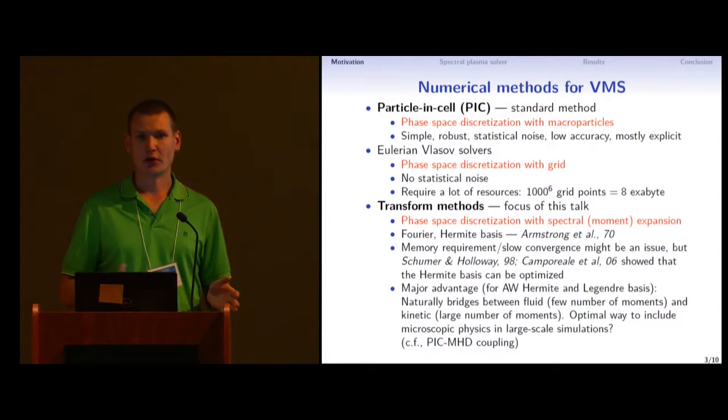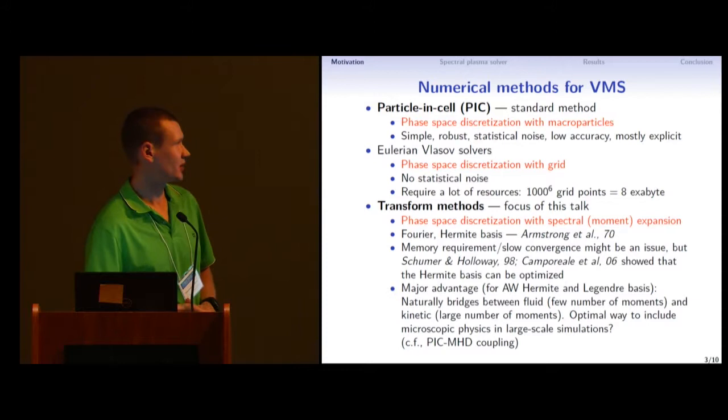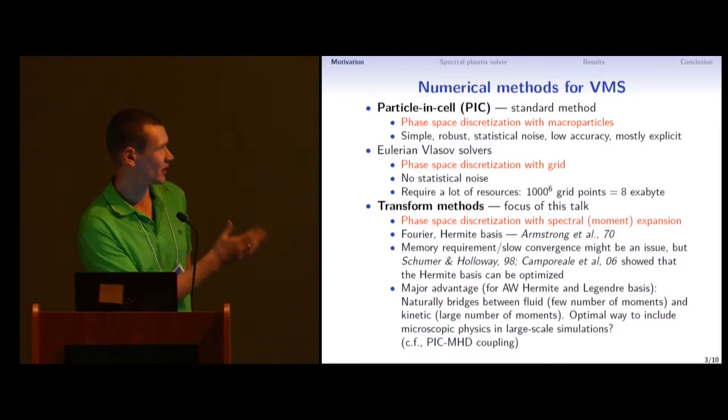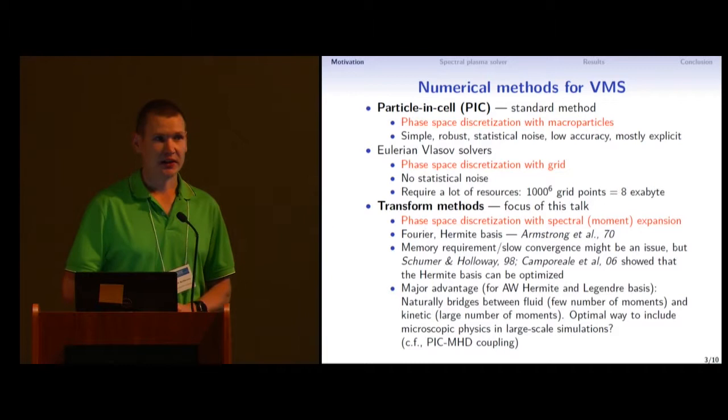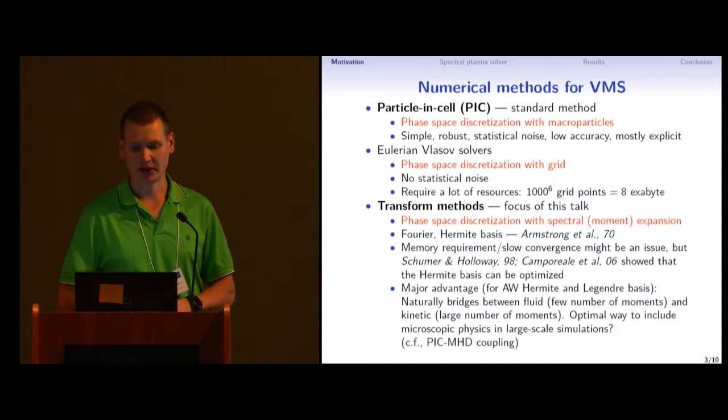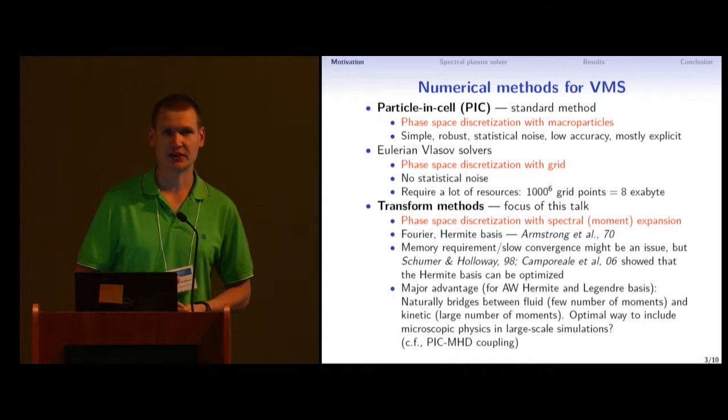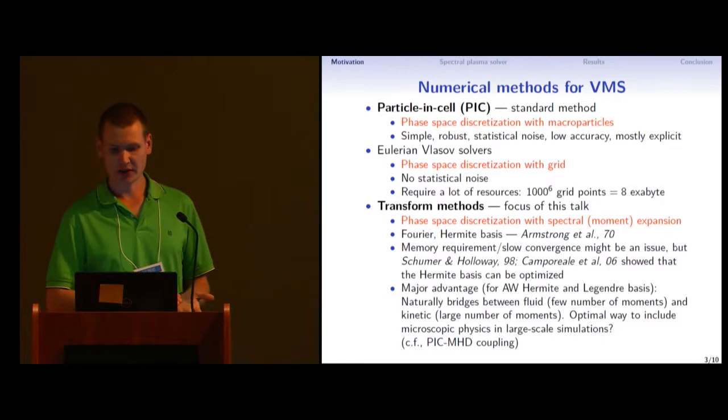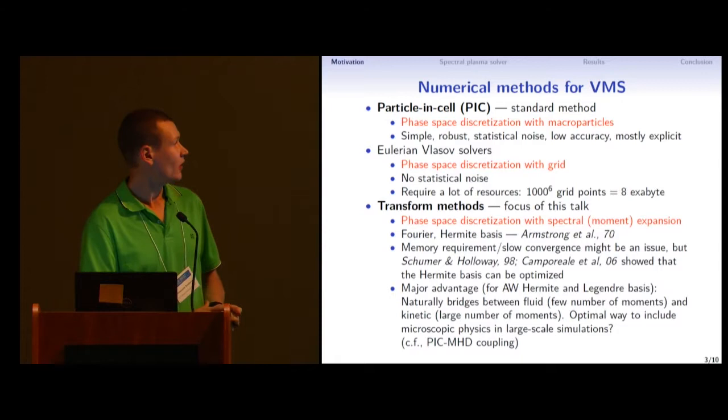There are other approaches like discretizing the phase space on Eulerian grid, and it solves problem of statistical noise. However, you cannot do it naively discretizing the whole six-dimensional phase space because it's prohibitive. If you throw 1,000 points in every direction, it would be 8 exabytes of data or something like this. So you need to do something smarter, and that's what we are trying to do with transform methods, where the phase space is discretized with spectral expansion or moment-like expansion. People experimented with such techniques before in the 70s, and unfortunately it wasn't very efficient at the time.